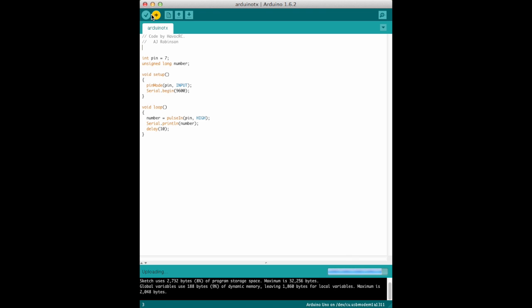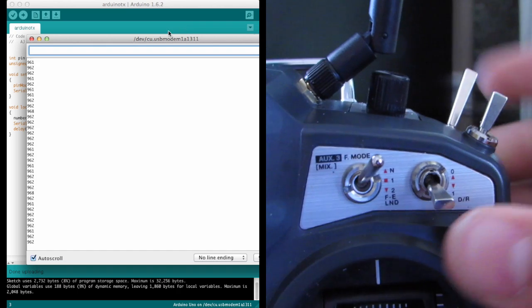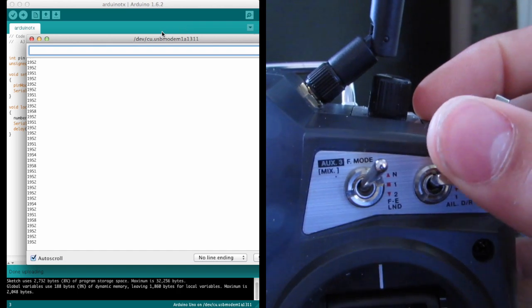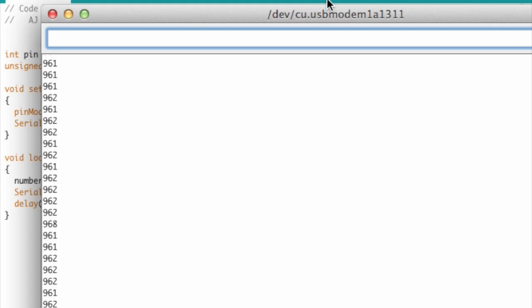Download and upload this simple Arduino sketch that I created. Now you will actually be able to see the signal being sent from the transmitter. Flip the switch up and take note of the number. Flip the switch down and take note of that number.